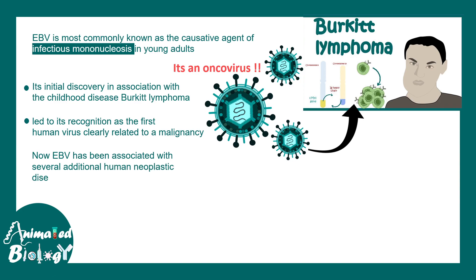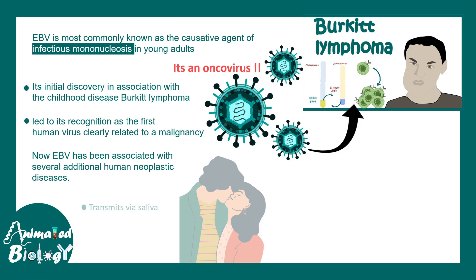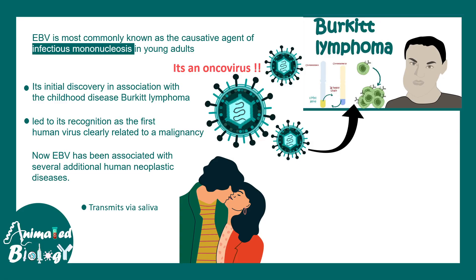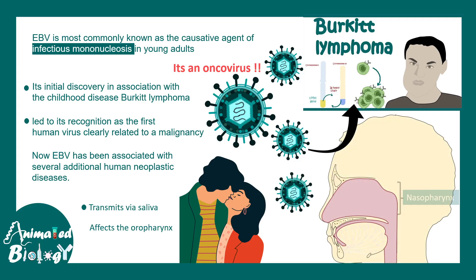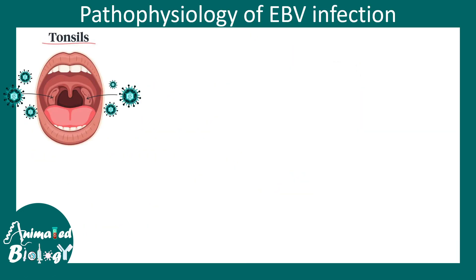EBV has been associated with many neoplastic diseases in humans. Most importantly, it transmits via saliva and oropharyngeal secretions, affecting the oropharynx specifically. The virus can enter through saliva — here is the nasopharynx and here is the oropharynx, which is really the area getting affected. People also call it the kissing disease since it spreads via oropharyngeal secretions.